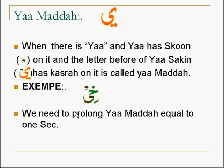Our last Madd letter is Ya Madd. When there is a Ya and the Ya has a sukoon on it — as explained on the previous page — and the letter before the Ya sakin has a kasra, it is called Ya Madd. A sukoon letter means whenever a letter comes with sukoon — for example, Ba with sukoon is Ba sakin, Jim with sukoon is Jim sakin.